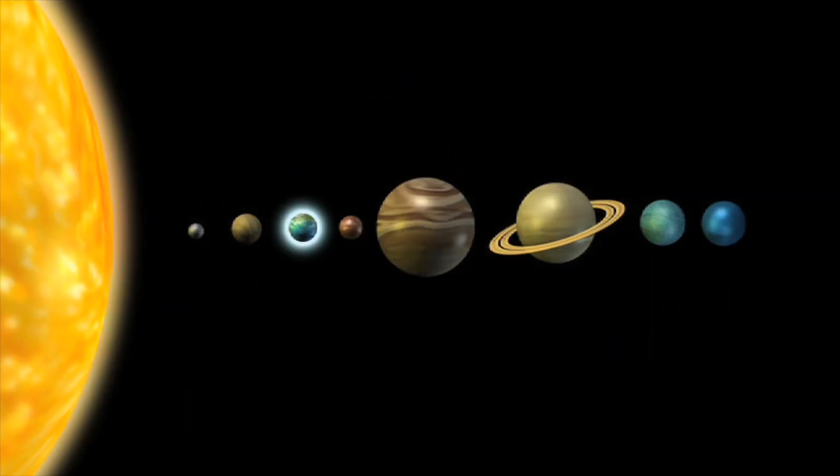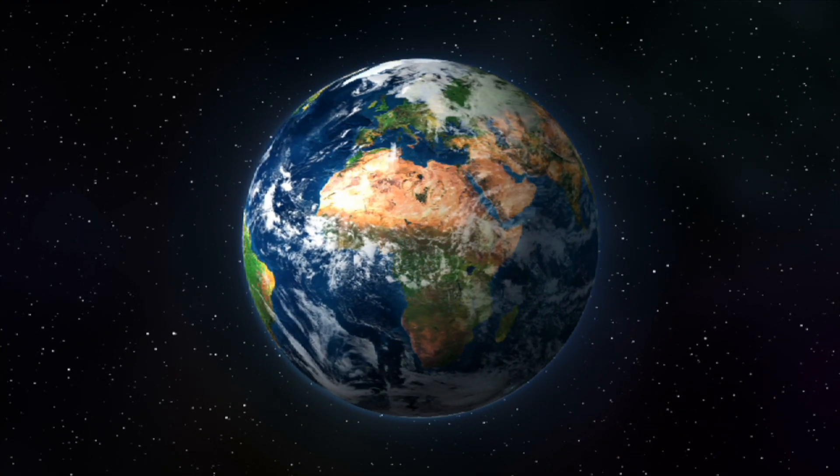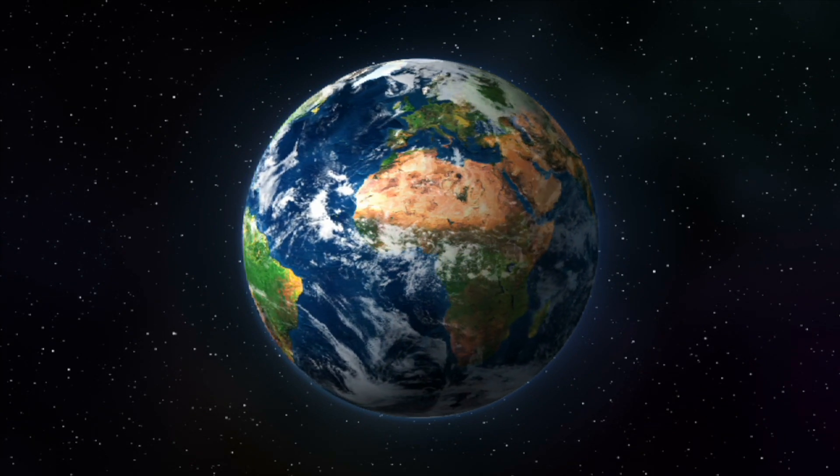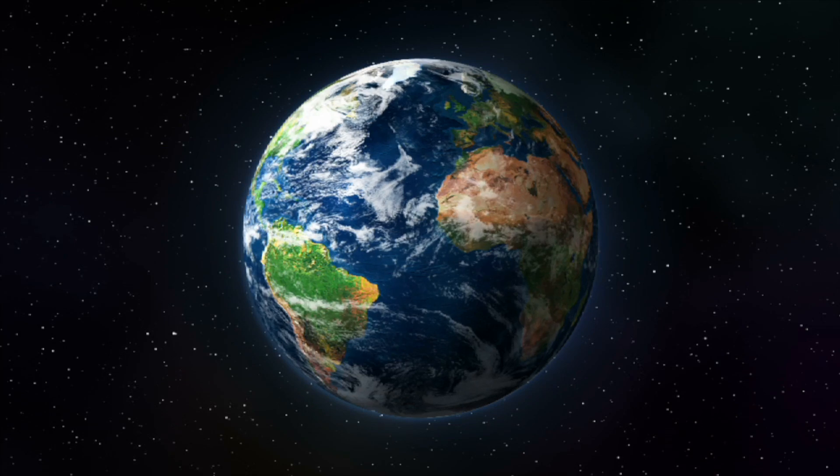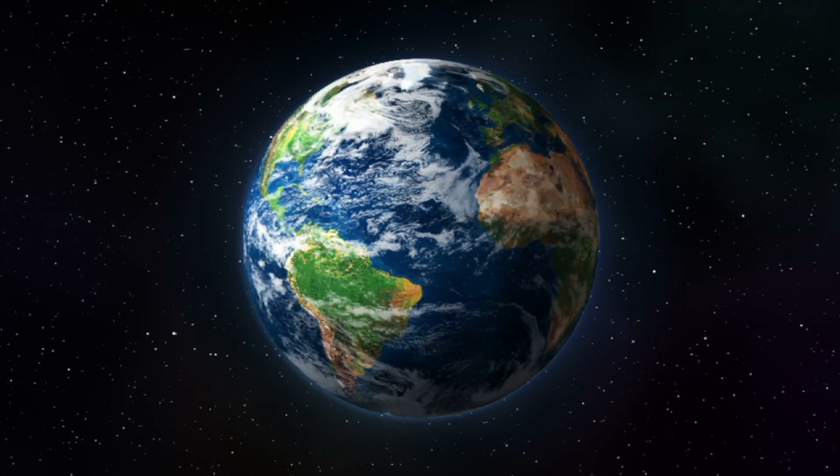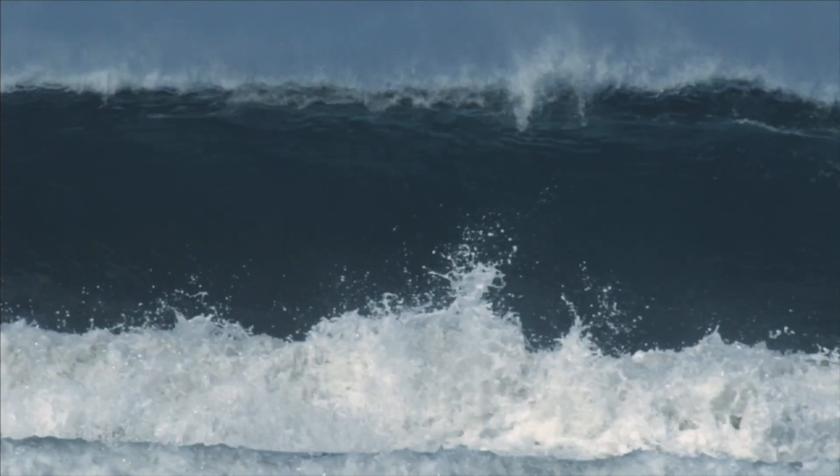Earth is the third planet from the sun. It is the largest of the four inner planets. Earth is often called the water planet, because it is the only planet in our solar system that has liquid water on its surface. About 70% of the surface of Earth is covered in water.